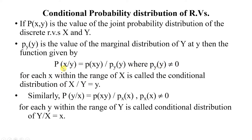This is obtained using the concept of conditional probability. The probability of A given B equals probability of A intersection B divided by probability of B, where probability of B is greater than 0. So instead of A intersection B, we have the joint probability distribution p(x,y), divided by the marginal probability of y, p(y), where the denominator must be greater than 0. For each x within the range of x, this is called the conditional distribution of x given y equal to y.